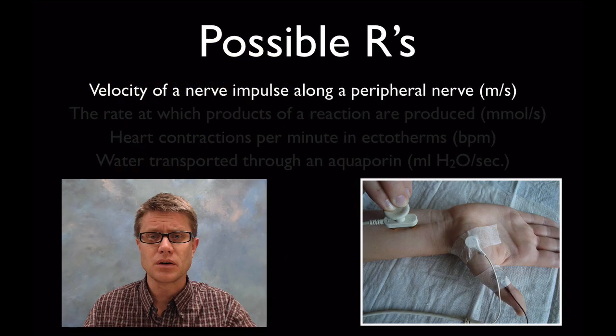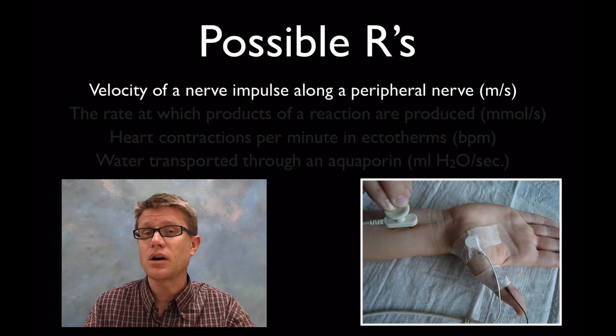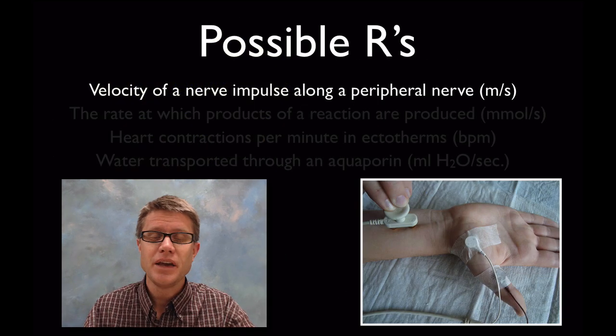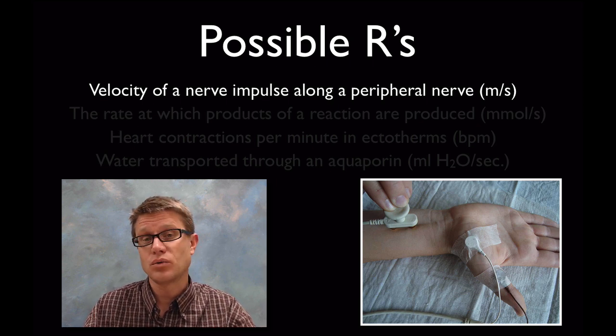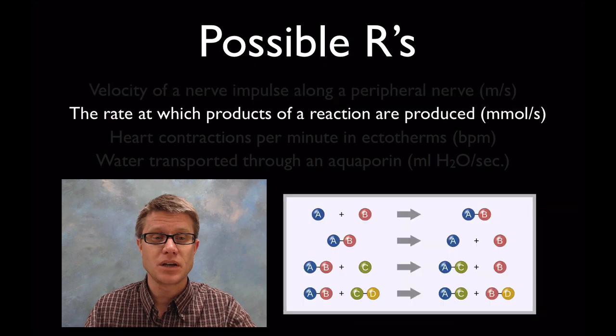So what Q10s could we measure? In other words what are our possible R's? Well we could look at the velocity of a nerve impulse along a peripheral nerve in meters per second. Those could be our two rates. And then we could measure that at different temperatures.